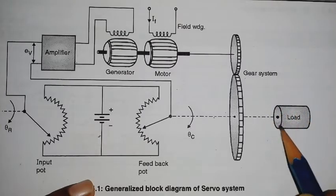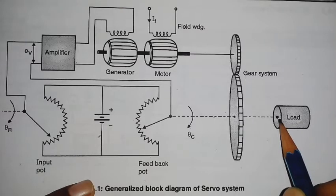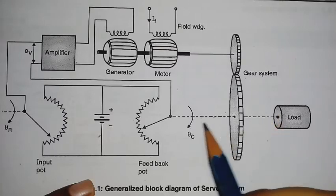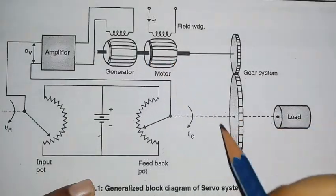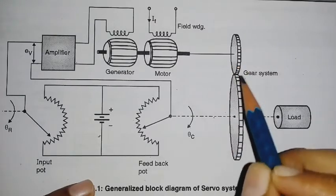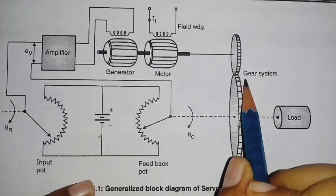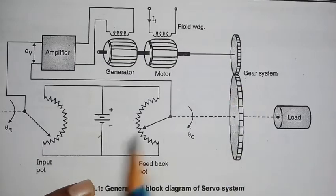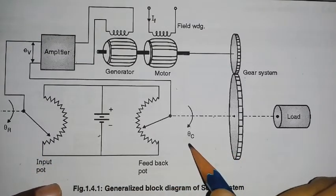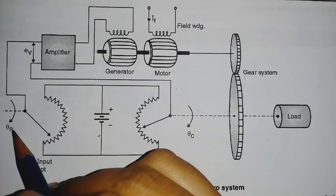The load is driven by the motor through the gear system. The motor drives the load through the process of moving via the gear system. Here, QC denotes the controlled output position, while QR denotes the reference position.